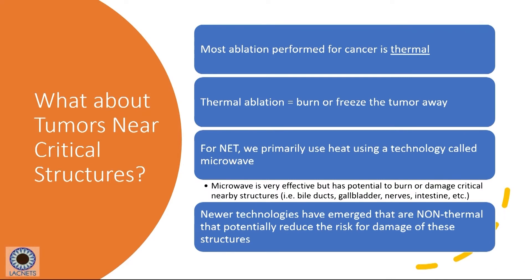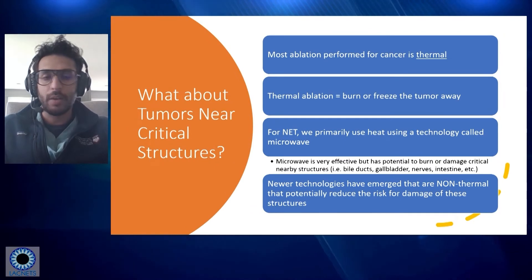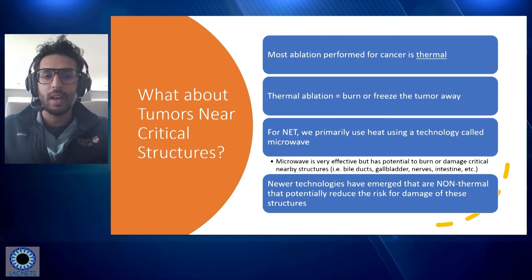What about tumors that are near critical structures? This is not an uncommon problem and is one of the common reasons we can't do ablation. When we thermally ablate — using heat or cold energy to kill a tumor — microwave is very effective but has the potential to burn or damage critical nearby structures. In the liver there are plenty of them: bile ducts, gallbladder, nerves along the body wall, and intestines. We now have newer non-thermal technologies that don't use heat or cold energy, which has a lot of potential to reduce the risk of damage to these structures.